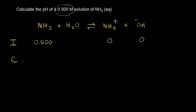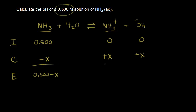For the change row: NH3 decreases by X, while NH4+ and OH⁻ each increase by +X, since the concentration lost by ammonia equals the concentration gained by ammonium and hydroxide. At equilibrium: [NH3] = 0.500 − X, [NH4+] = X, and [OH⁻] = X.